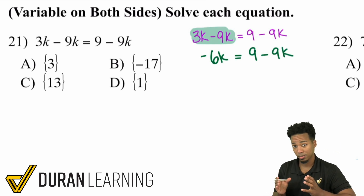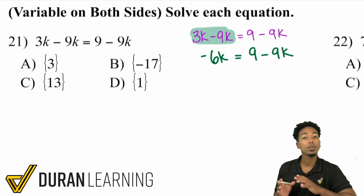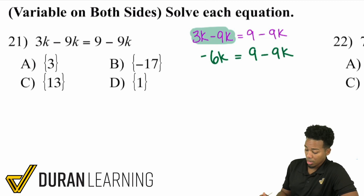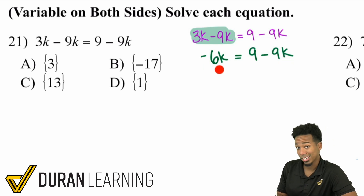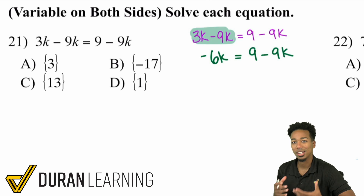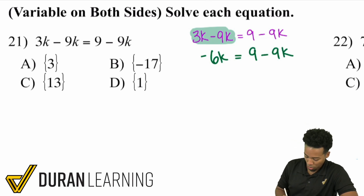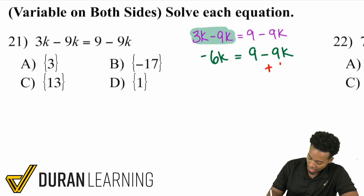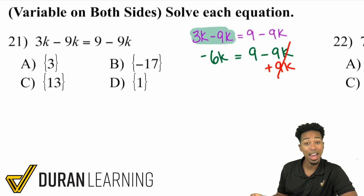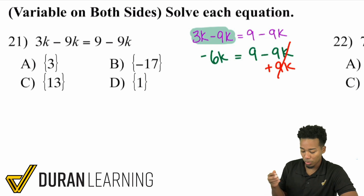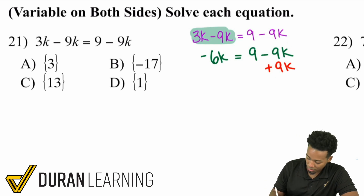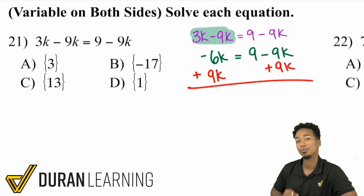My next step is going to be this. Remember, all you have to do is make sure that you do the same thing to both sides. On the right side I have negative 9k, and on the left I have negative 6k. I can't really solve this yet unless I bring them together. So all we need to do is do the same thing to both sides. If I add 9k on the right side, I eliminate it. But really what I'm doing is moving all the k variables to the same side.